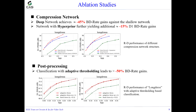For the compression network, experiments reveal that our deep network offers much better performance than a shallow network, achieving 45% BD-rate gains. The hyperpriors improve context modeling, yielding an additional 15% BD-rate reduction. For post-processing, the proposed adaptive threshold in classification leads to more than 50% BD-rate gains, and fine-tuning the threshold further improves performance at low bit rates.